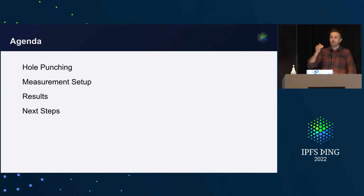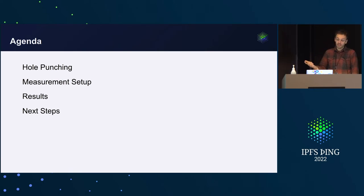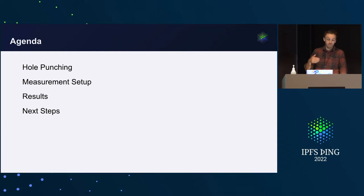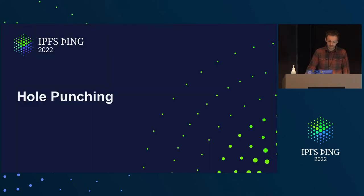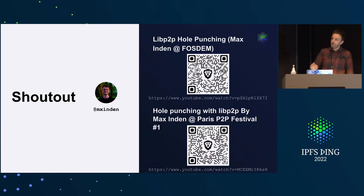In this talk I will describe how the hole punching process works in the scope of libp2p, then lay out how our measurement setup looks and how we want to measure the success rate of these hole punches. I'll show some first results — keep in mind this project is not as far along as the other two we've seen — and at the end I'll lay out some next steps.